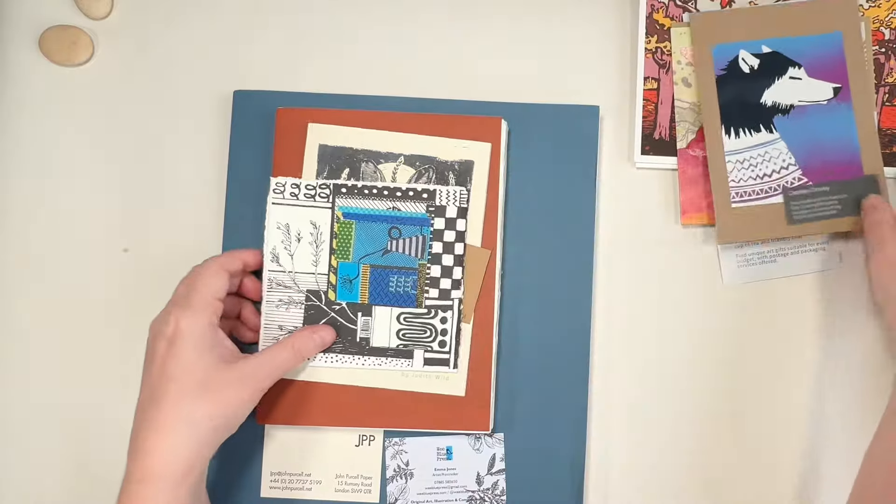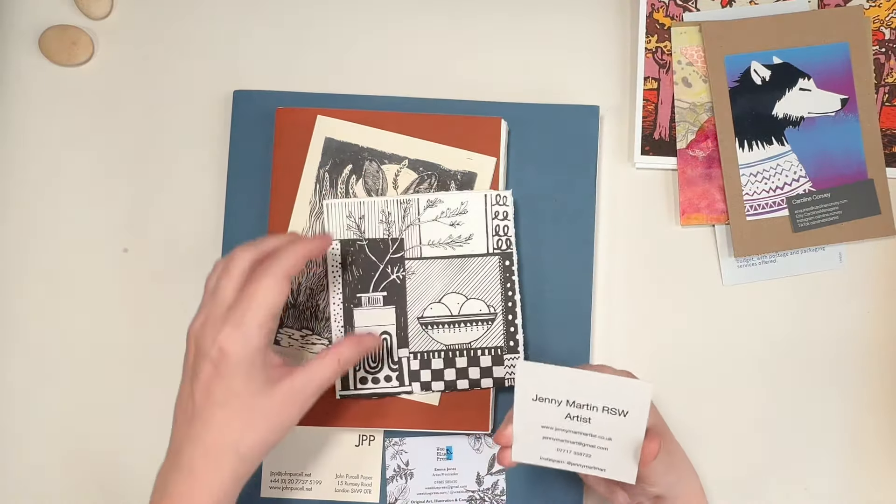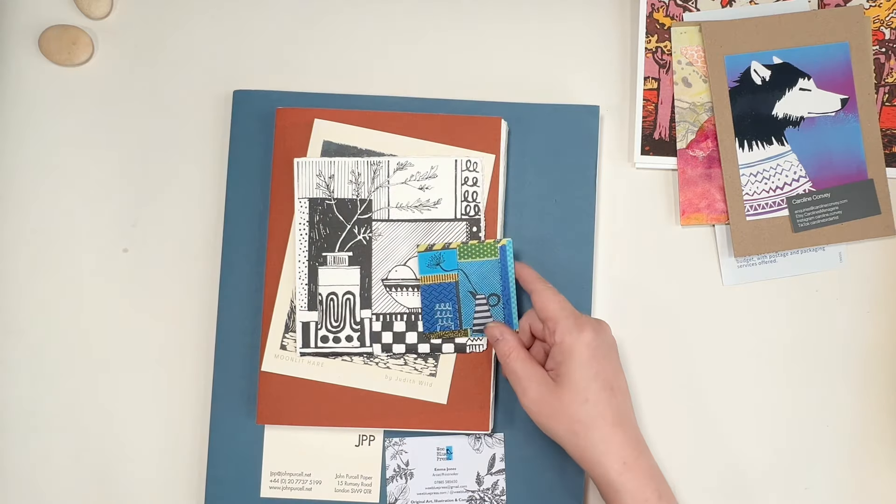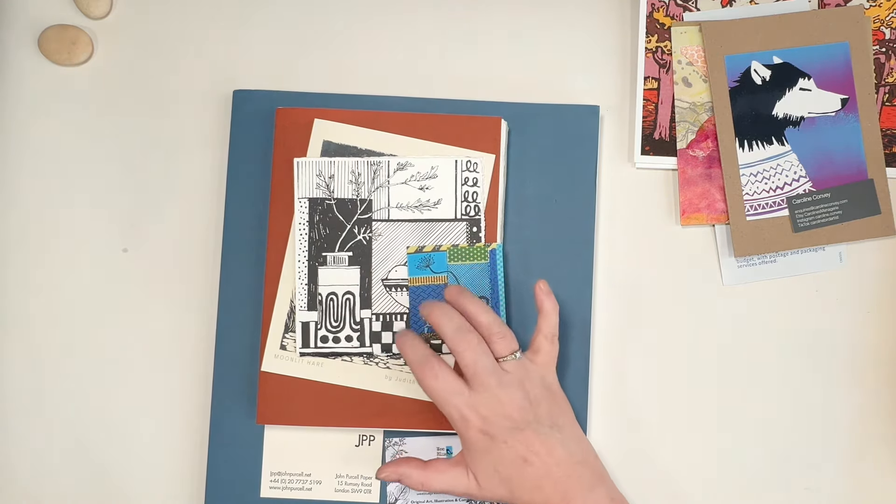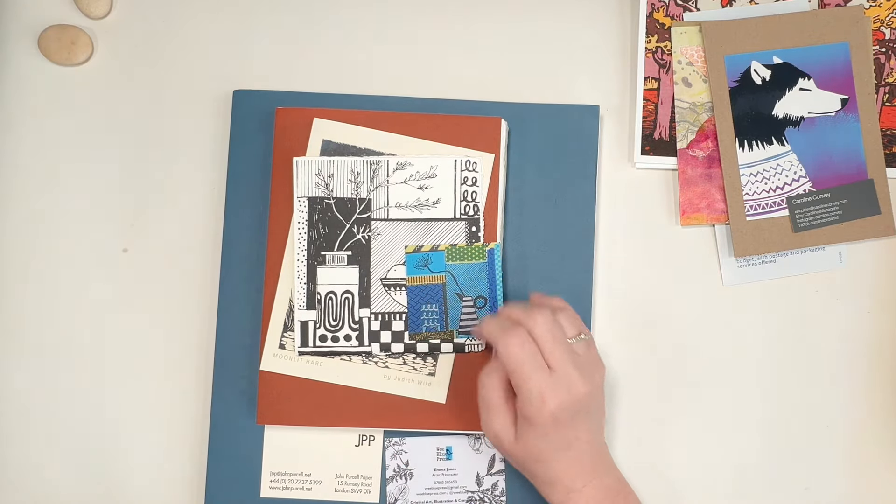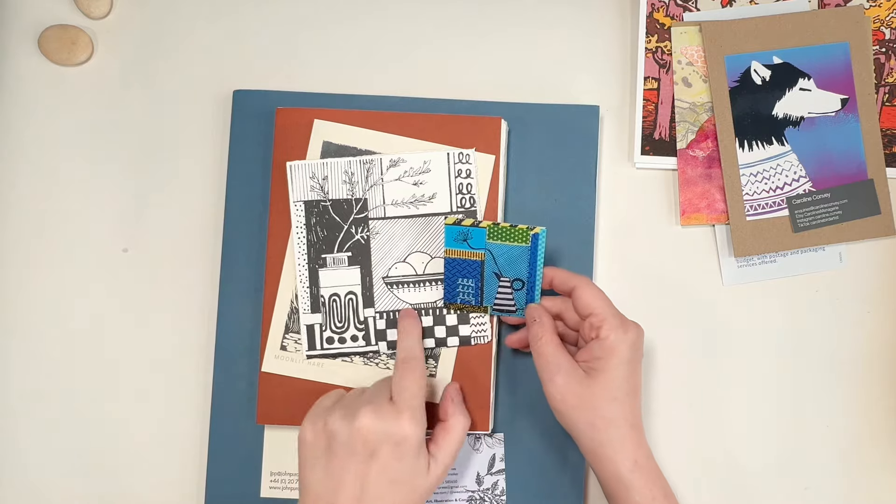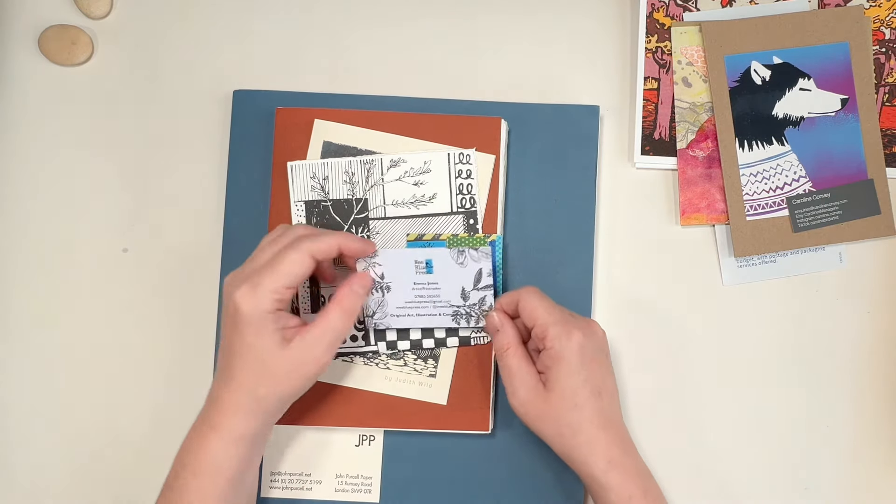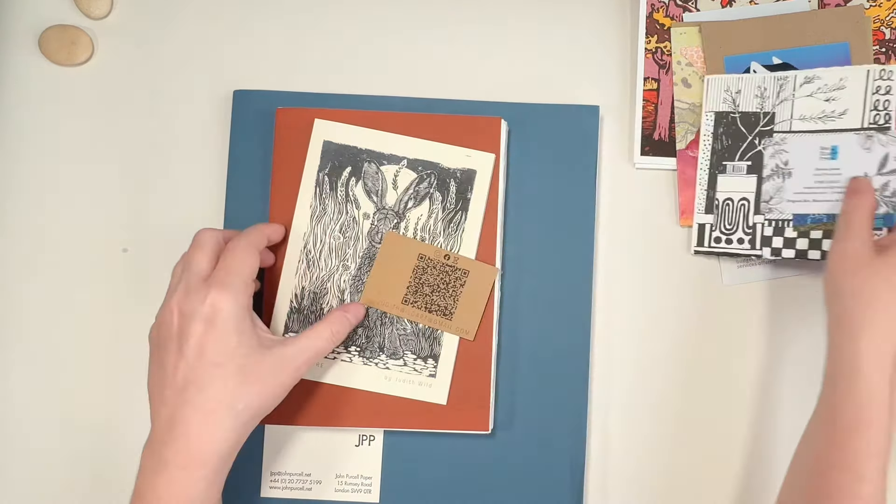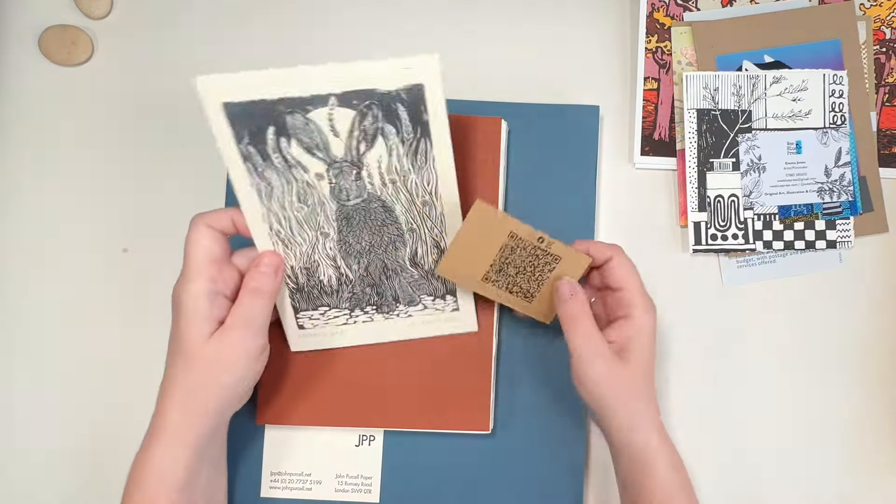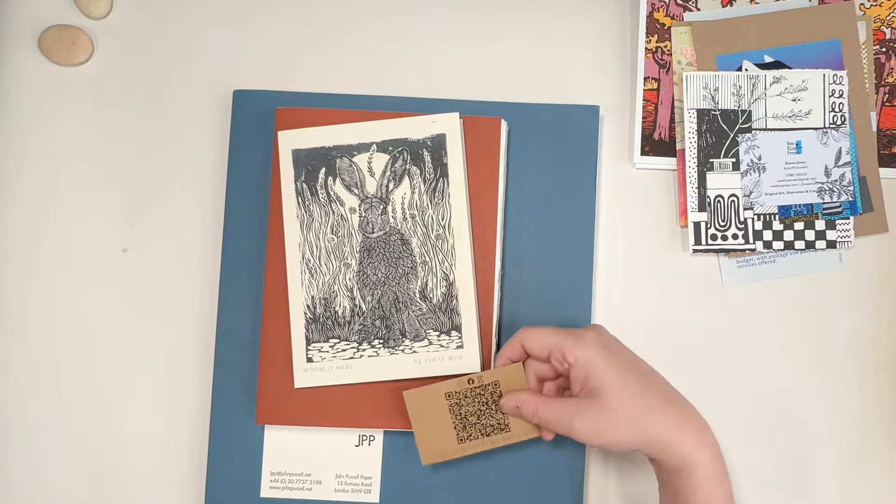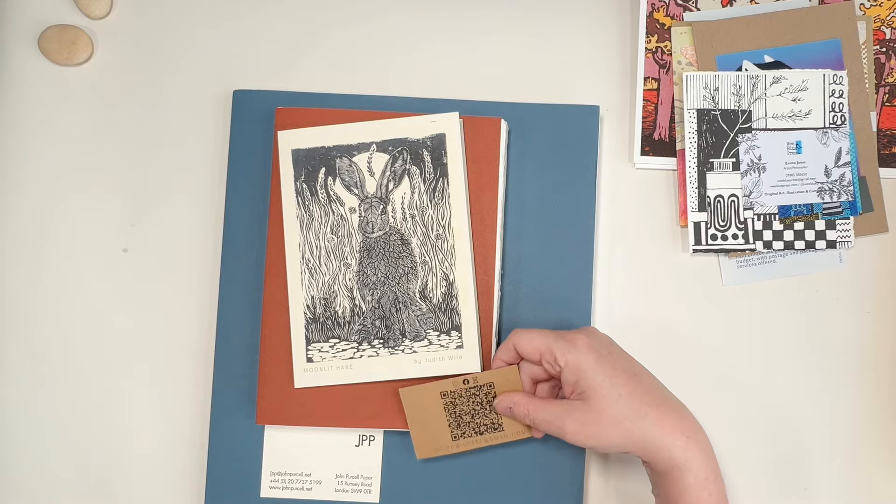Caroline Convey. Now this one, Jenny Martin, she does a lot of still lifes. So there was some sketchbooks out, so I had to look through some of her sketchbooks and it was really nice to see the kind of work in progress before it reaches the final stages. And the same with Emma Jones who's Wee Blue Press. And then this is Judith Wilde and she does lino cuts, and a lot of her work is based in nature as well.